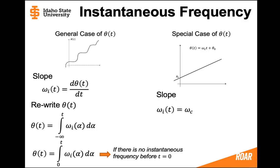So if we integrated the instantaneous frequency from minus infinity to t, we would be able to, with some variable alpha, we would be able to get the angle θ(t).